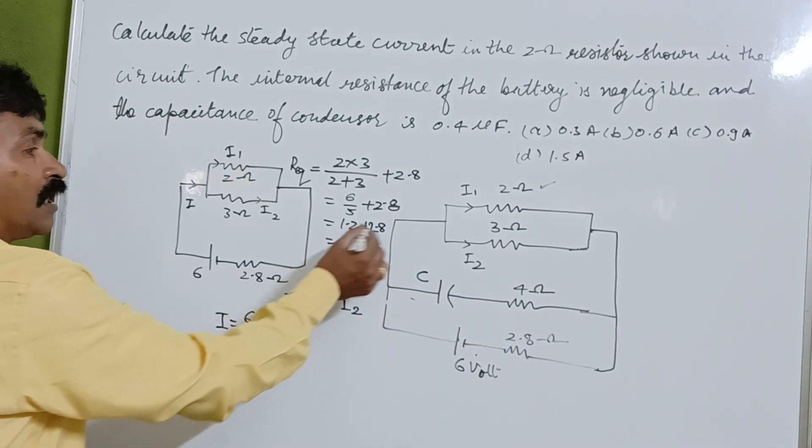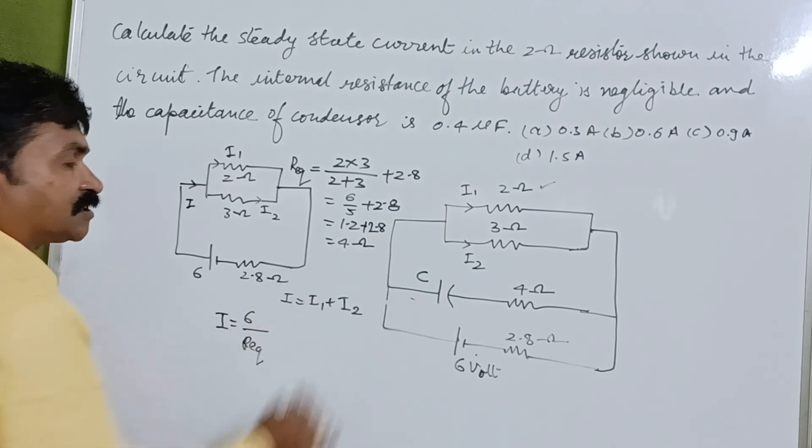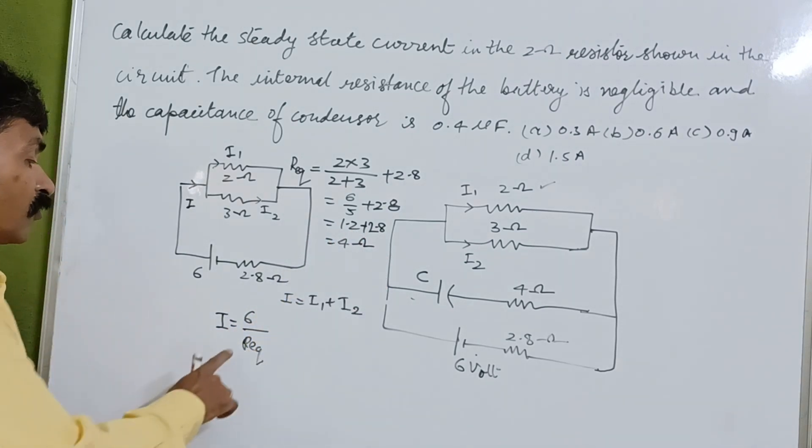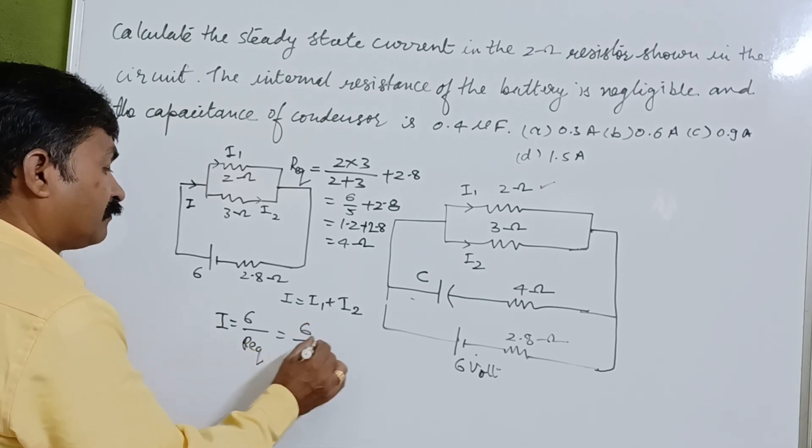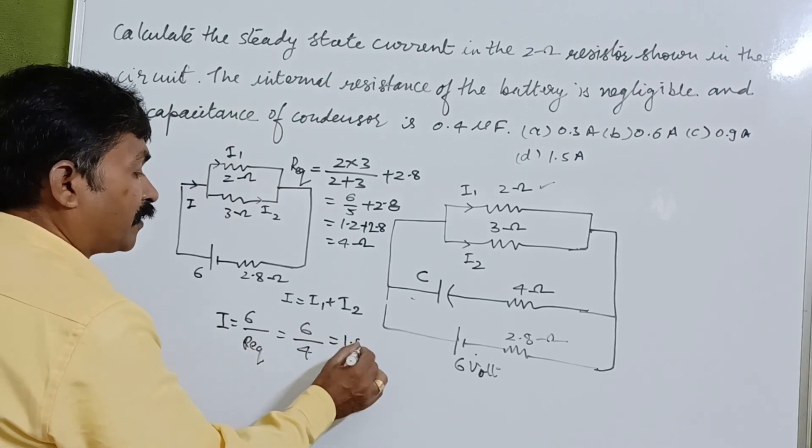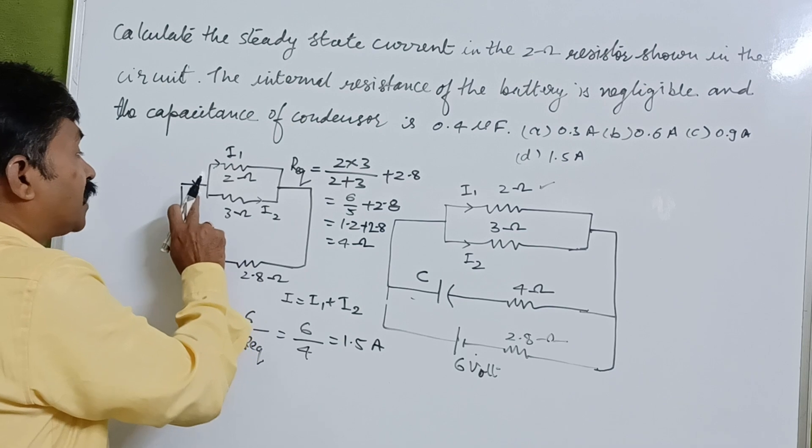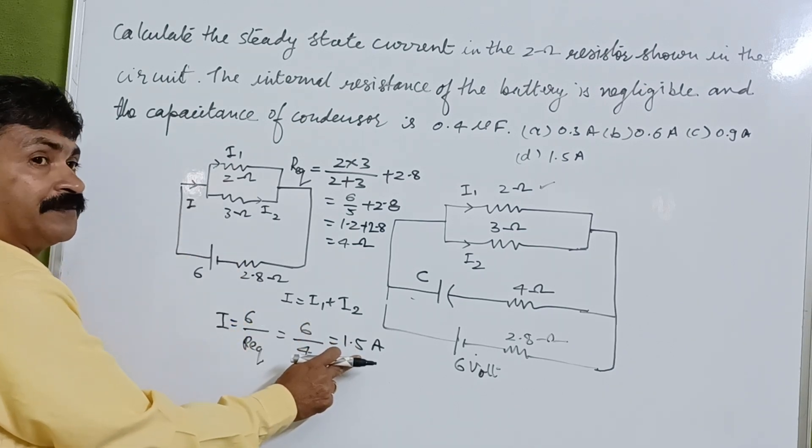Now you can see that the equivalent resistance is 4 ohm. 6 divided by 4 is 1.5 ampere. Now current i is equal to 1.5 ampere.